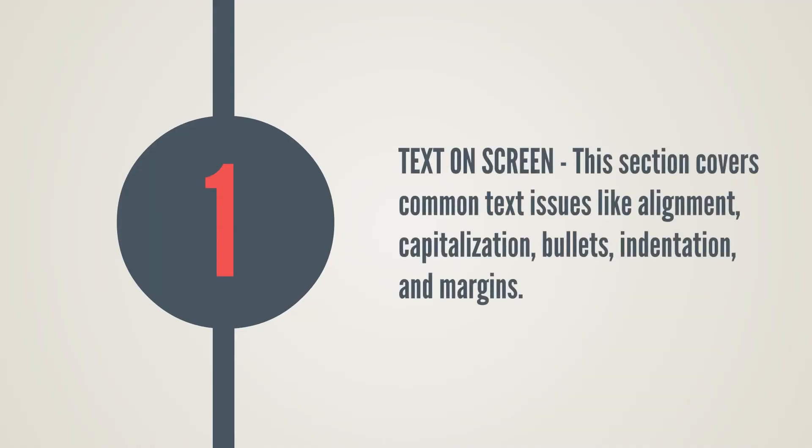You've met with your team and considered the pain points on previous projects. You may end up with a list that is larger than you expected. If you're the team leader, you should narrow the list and group items into categories. Let me share a few examples of categories we use on our team. Text on screen: this section covers common text issues like alignment, capitalization, bullets, indentation, and margins.